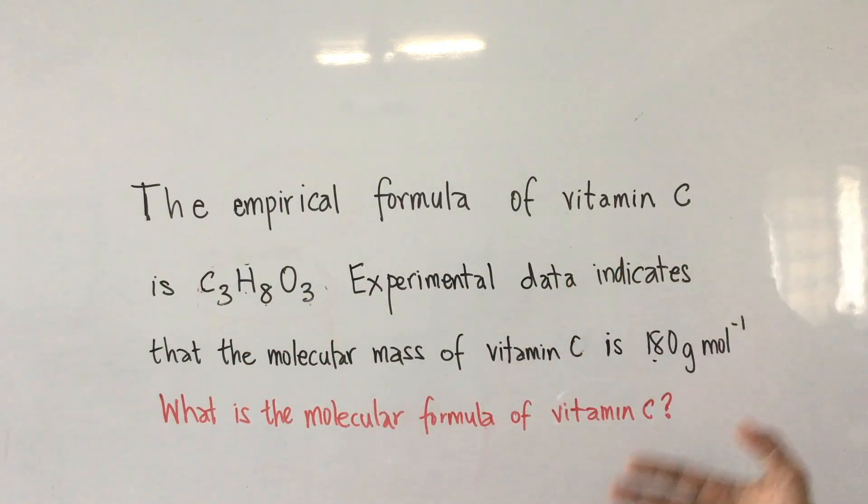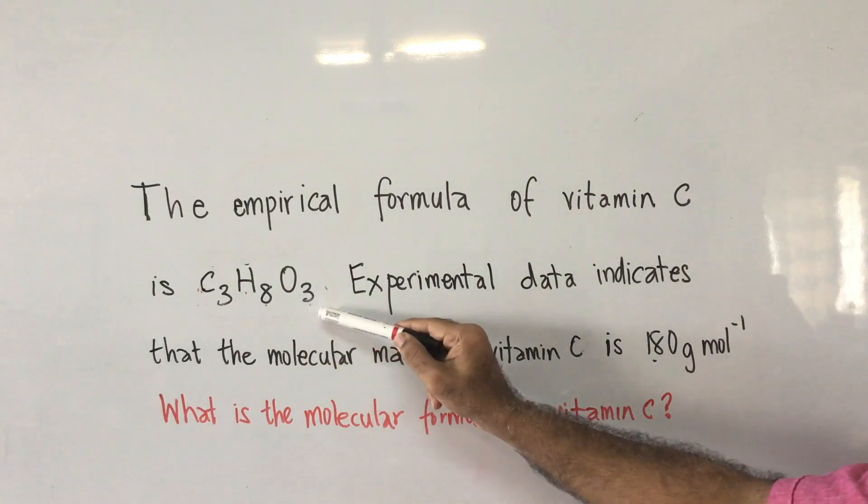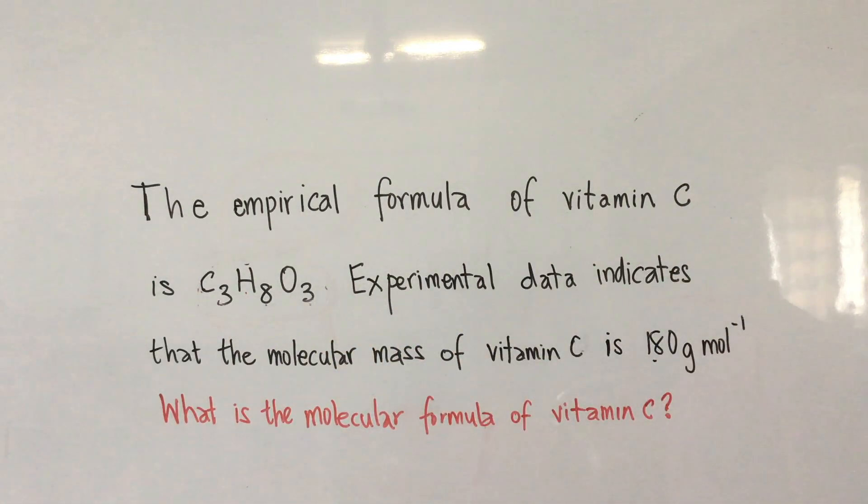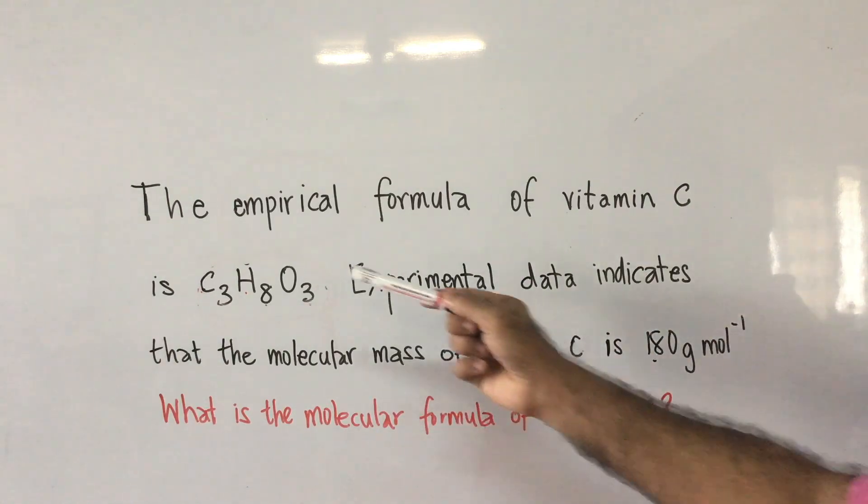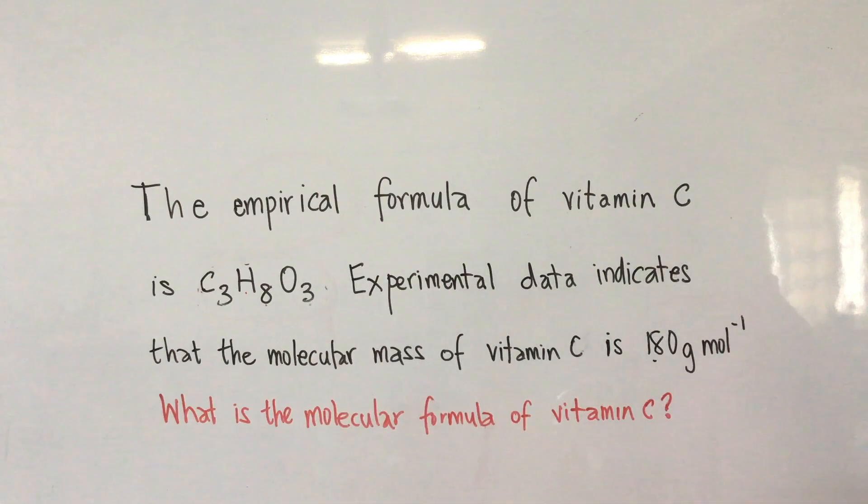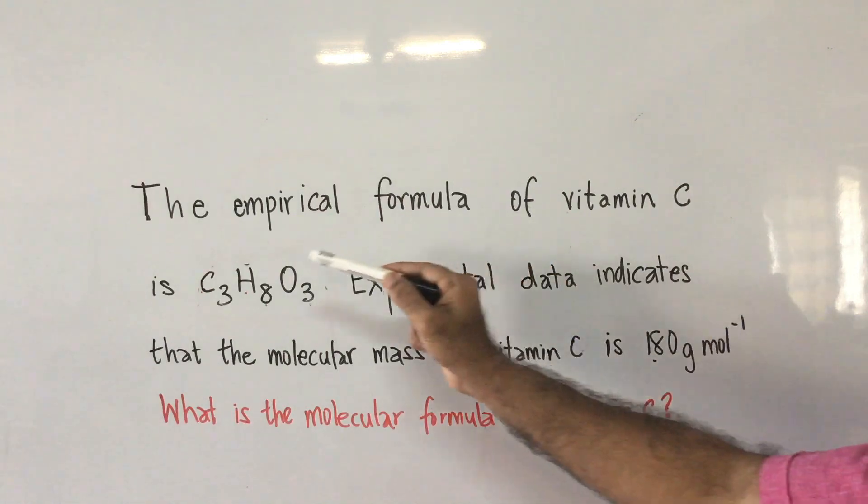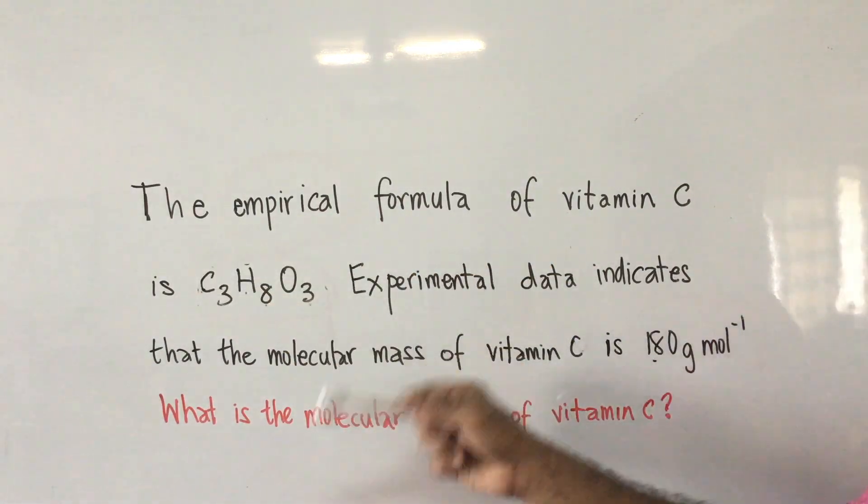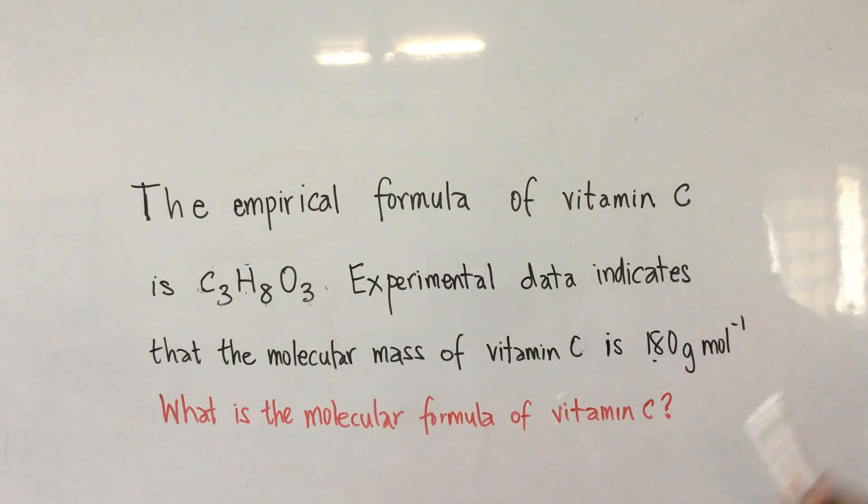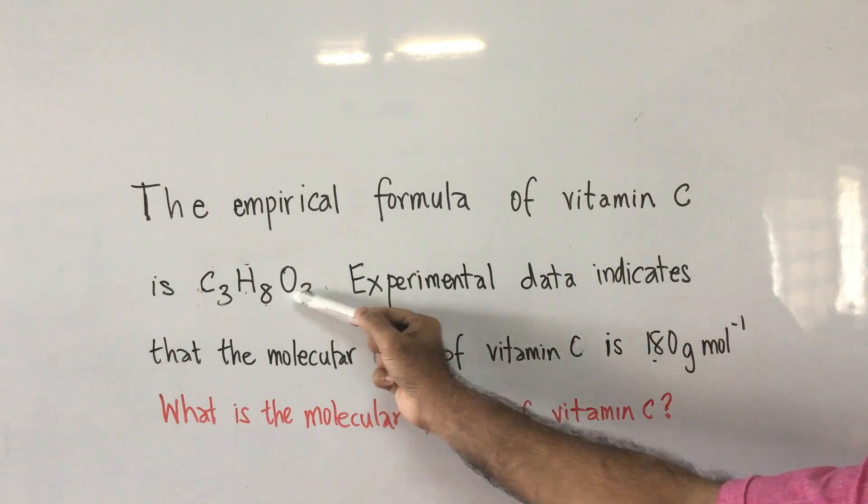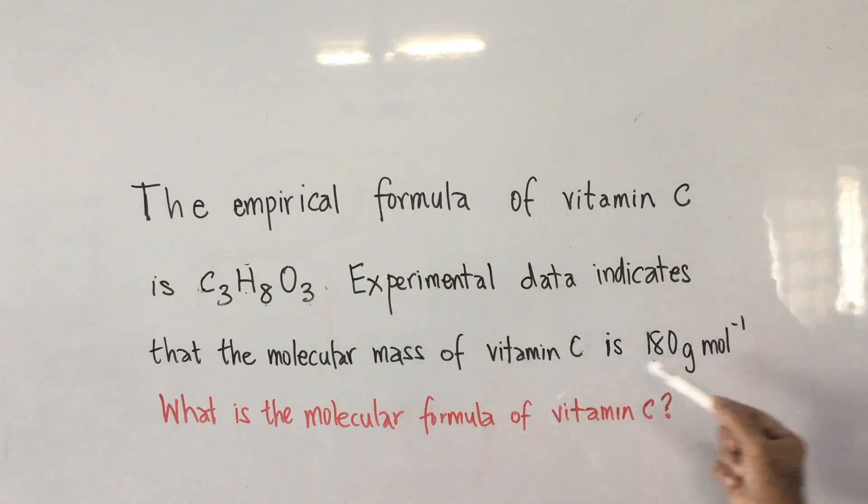For this vitamin C molecule, it's C3H8O3, the actual molecular mass of vitamin C. When you have one mole of vitamin C molecules, the mass of that is 180. It's possible that this 180 could be bigger than this formula mass based on the empirical formula. It's also possible that it could be the same number. How many times is this greater than this? We've got to figure out how many of these you can get in one of these.